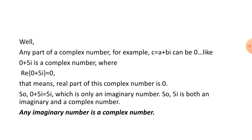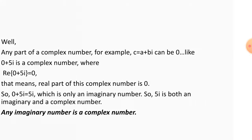The real part can be 0 or the imaginary part can be 0. For example, if C is a complex number, then C = a + bi. If a = 0, then we have 0 + 5i, where the real part is 0. So 0 + 5i = 5i, which is purely an imaginary number, and it's also a complex number. We can conclude that any imaginary number is also a complex number.